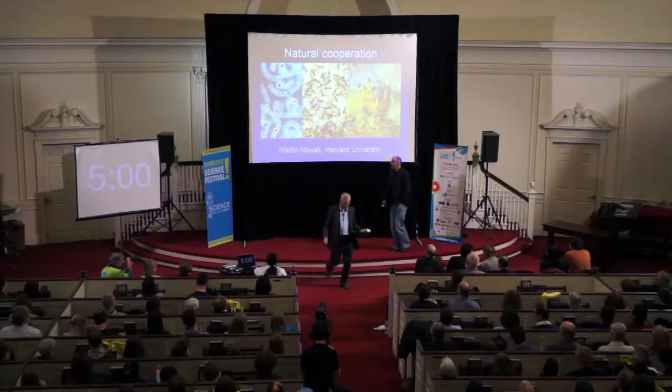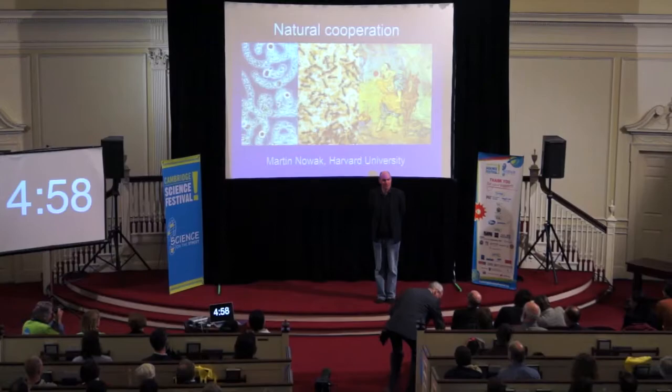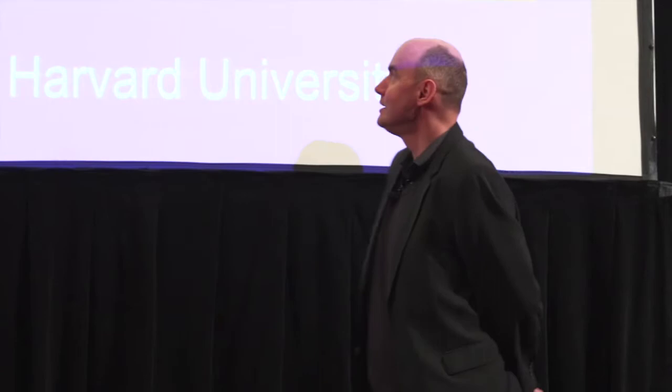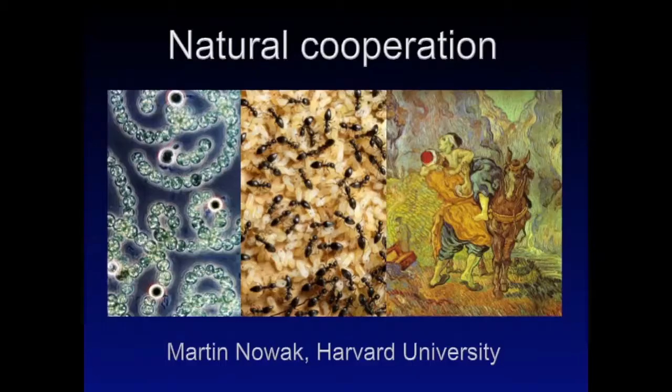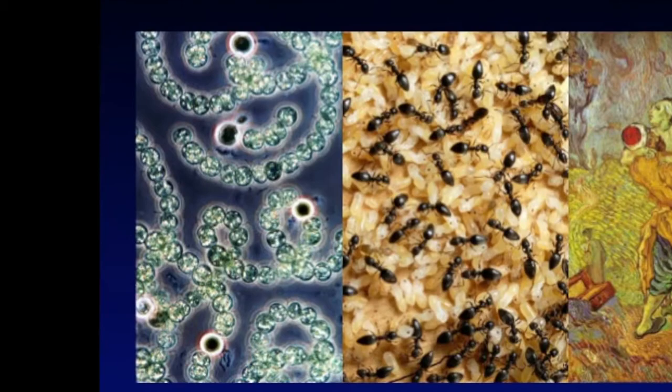I'm a mathematician and biologist interested in the theory of evolution, and one of my favorite topics is cooperation. Here you see three examples of cooperation among cells — among bacterial cells as it existed three billion years ago, they form filaments. Every so often a cell dies to feed the others with nitrogen.